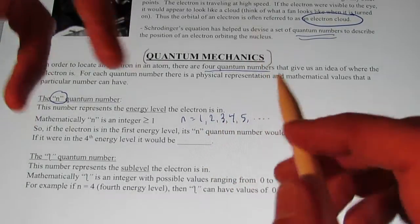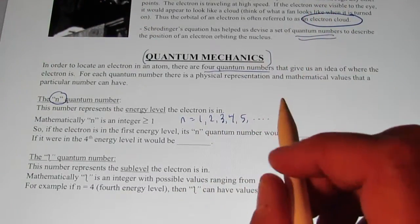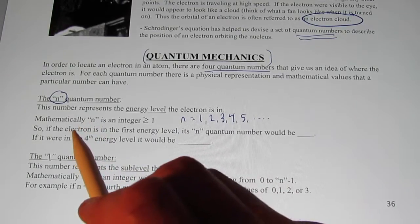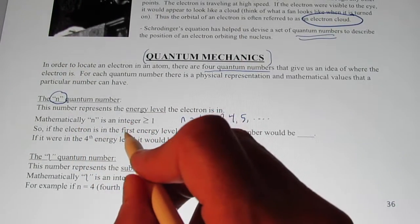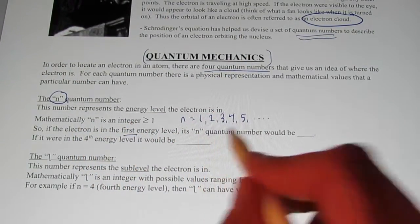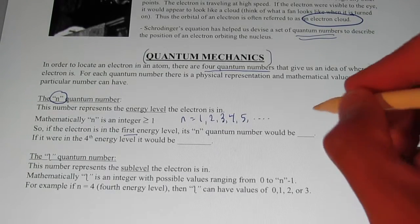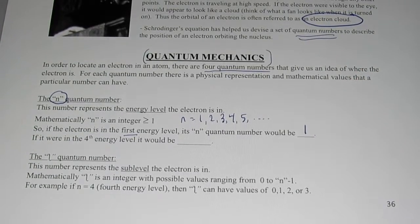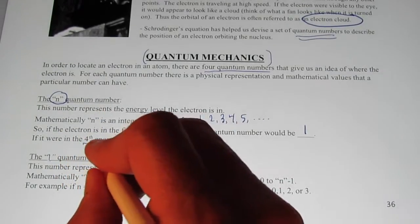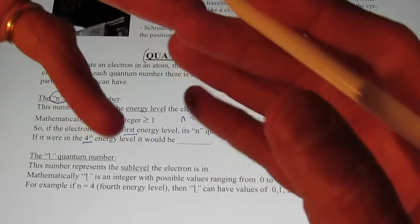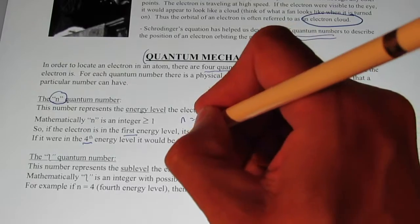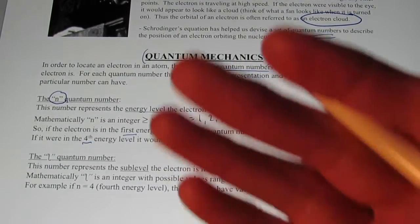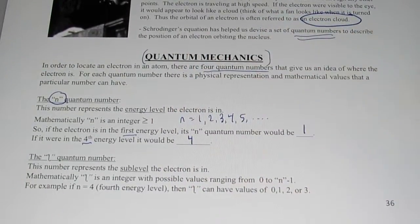It must be integers and that simply represents the energy level that the electron is in. So if I were describing an electron in the first energy level, its n quantum number would obviously be one. You guessed it. Well, what if it were in the fourth energy level? Well, then the n quantum number would be four. Yes. Isn't the n quantum number easy to understand?